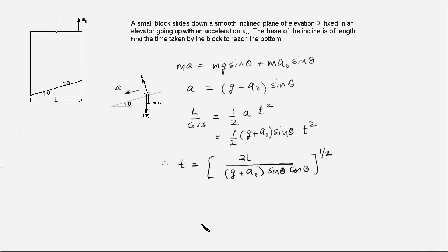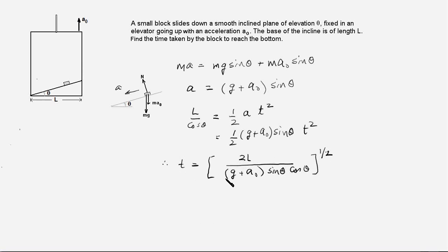Plugging in the value of A, we get L upon cos theta equals half times (G plus A0) sin theta times t squared. Therefore, t equals the square root of 2L divided by (G plus A0) sin theta cos theta. The time taken by the block to reach the bottom is the square root of that expression, and that's our answer.